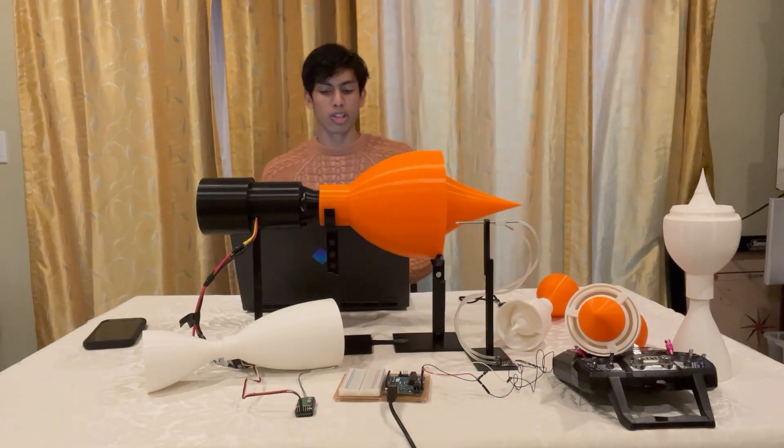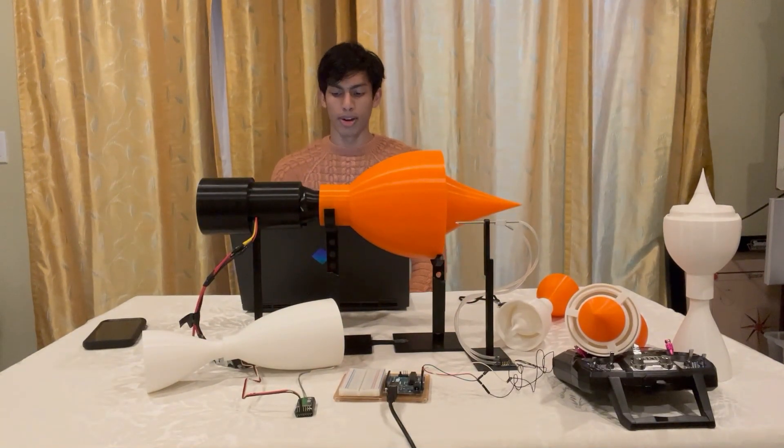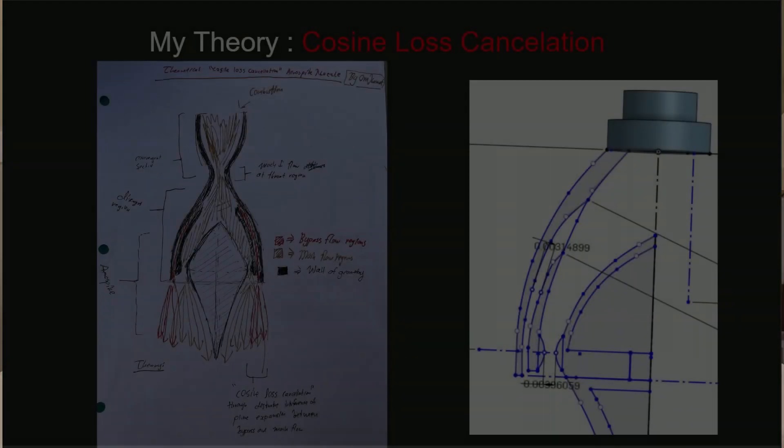The main goal of this project was to create an altitude compensating rocket nozzle, and more specifically, test my theory of cosine loss cancellation.